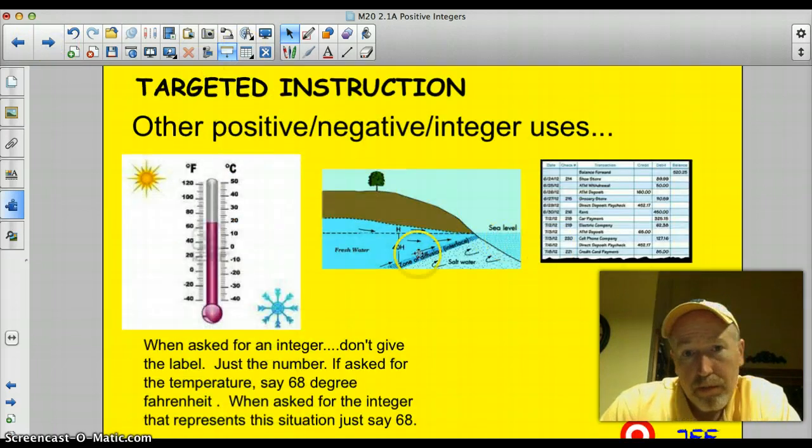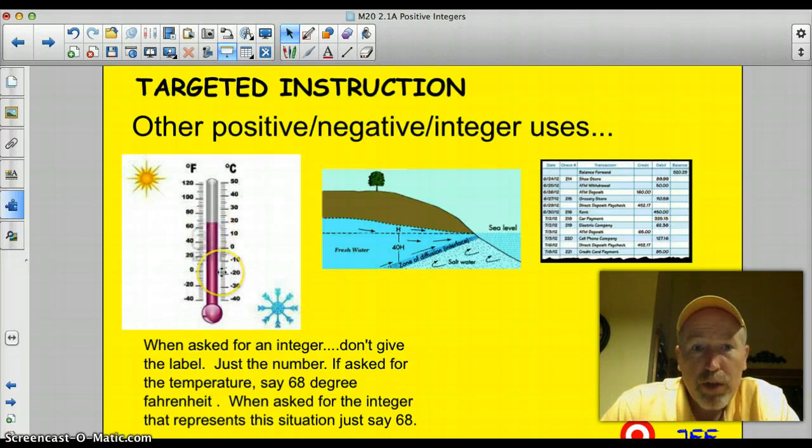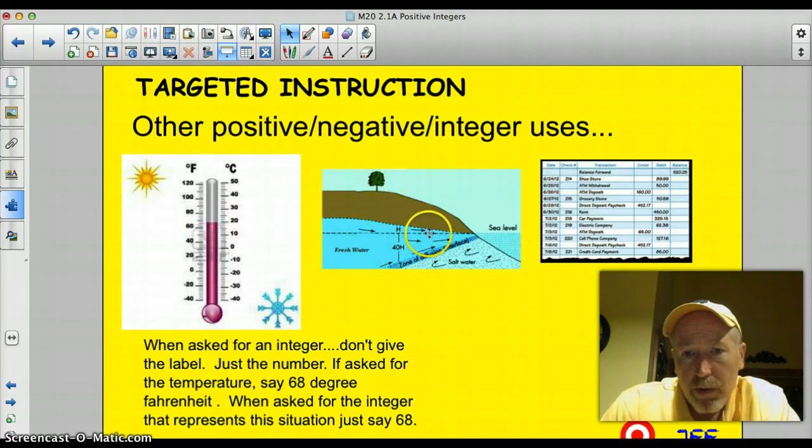Some other positive and negative integer uses. Oftentimes when we talk about temperature in January, we have numbers in the negative, negative 20, minus five. Those are negative integers. Also, we would have them in positive numbers in the nicer months of the year. And hopefully they're in that 60 to 80 degree range, which would be positive numbers.